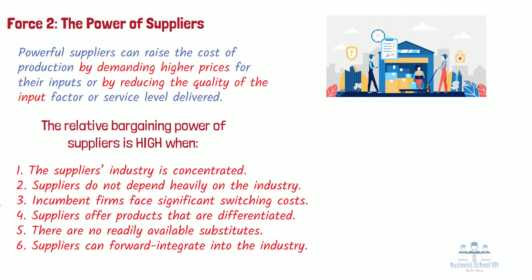1. The supplier's industry is more concentrated than the industry it sells to. 2. Suppliers do not depend heavily on the industry for a large portion of their revenues. 3. Incumbent firms face significant switching costs when changing suppliers.